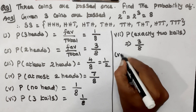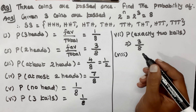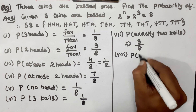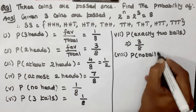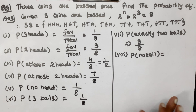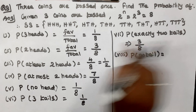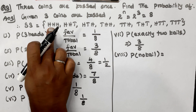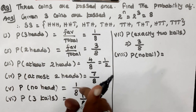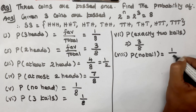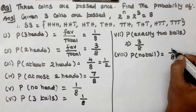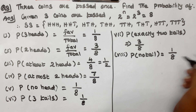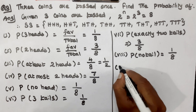Question number 8: Probability of no tails. No tails means Head Head Head, which occurs once. The favorable outcome is 1 and the total outcome is 8. So the answer is 1 by 8.